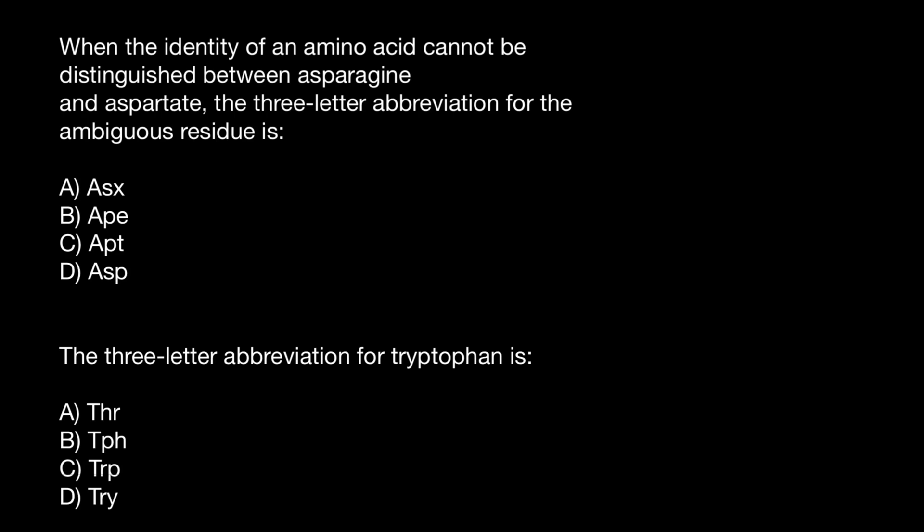Hello and welcome to Nikolai's genetics lessons. The first question is: when the identity of an amino acid cannot be distinguished between asparagine and aspartate, the three-letter abbreviation for the ambiguous residue is — you have to choose one of these answers. The second question is also similar to the first one.